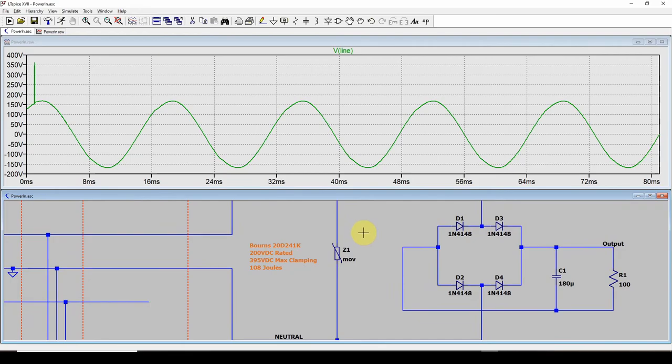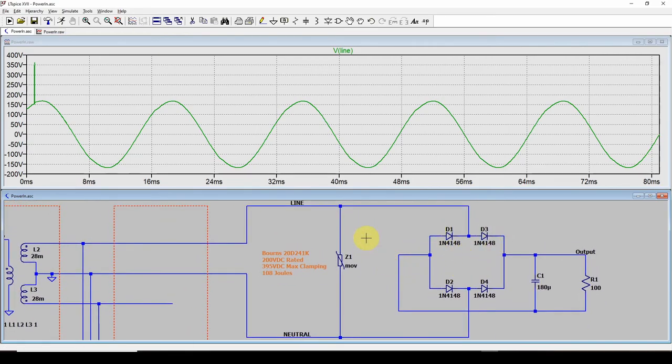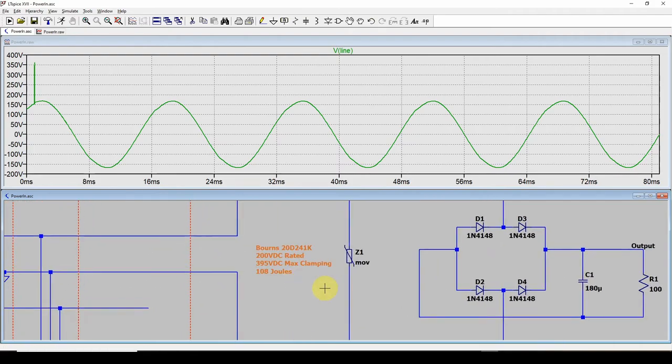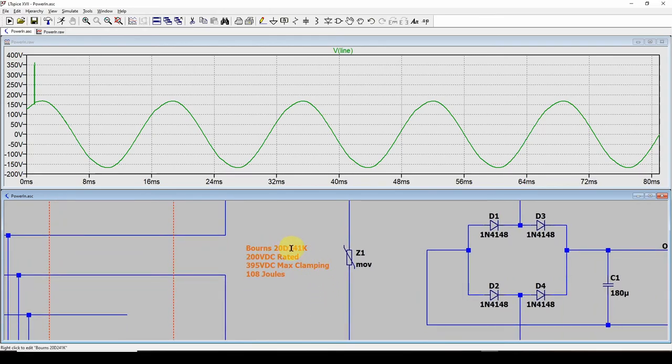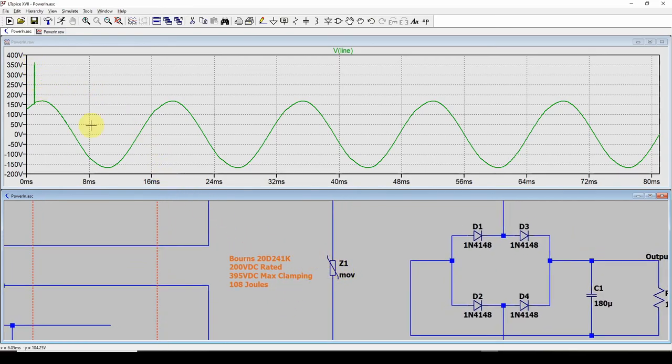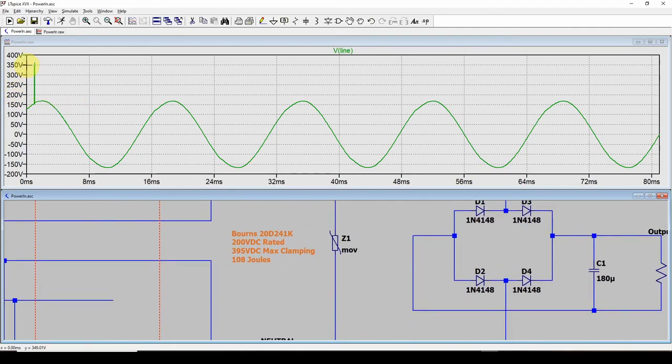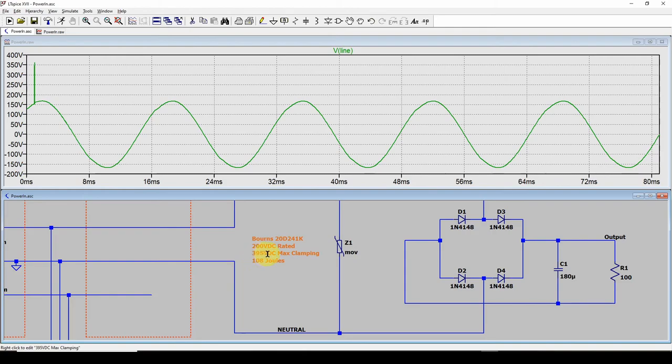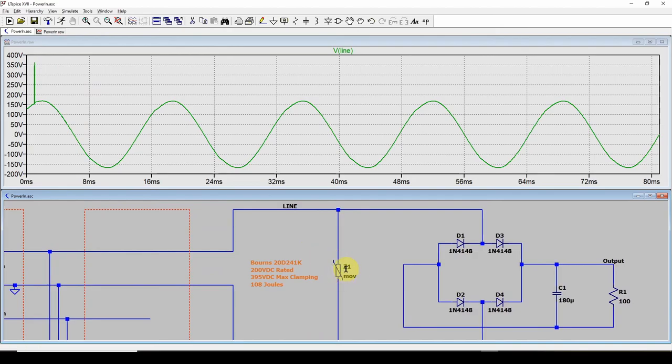So what we're going to do, I have added to the input of this simple bridge rectifier. We've got the 120 volts coming in. I've added an MOV and this is I just happen to be able to get a hold of a Bourns 20D 241K that's kind of sort of close to what we might need. It's rated 200 volts DC. It clamps at around 395 volts and it can withstand 108 joules. So, you know, this can only withstand a certain amount of heat and energy before it's going to blow up. So the reason why we're only seeing on this secondary measured across this MOV, why we're only seeing 350 is probably because this is in service and it's clamping at up to 395 volts.